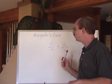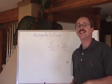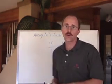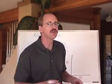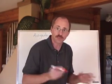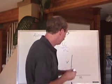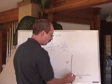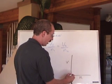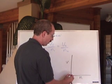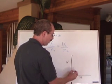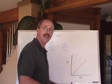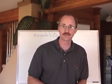So V1 over N1 equals V2 over N2, and that's Avogadro's formula. If you were to graph that, if you had zero number of moles you'd have zero volume, so you start down at the zero mark and work up in a directly proportional manner.